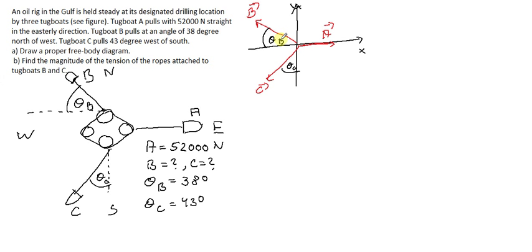We see that A is strictly along the x-axis, but B and C both have x and y components, so we need to find these components. We have to be very careful about which component is adjacent and which is opposite to the angle, and also careful about the signs.